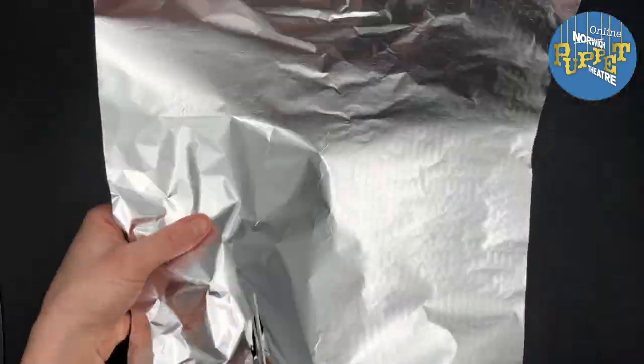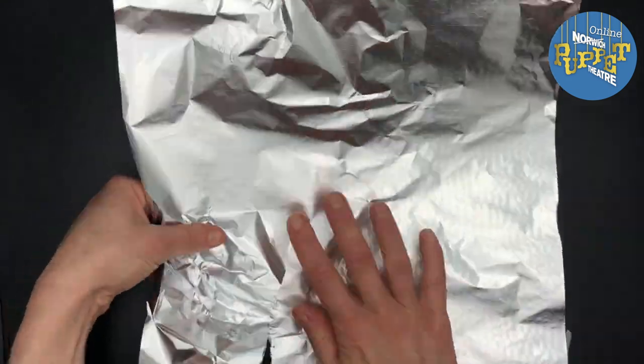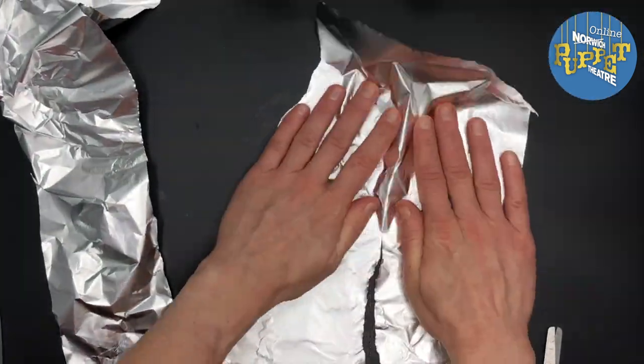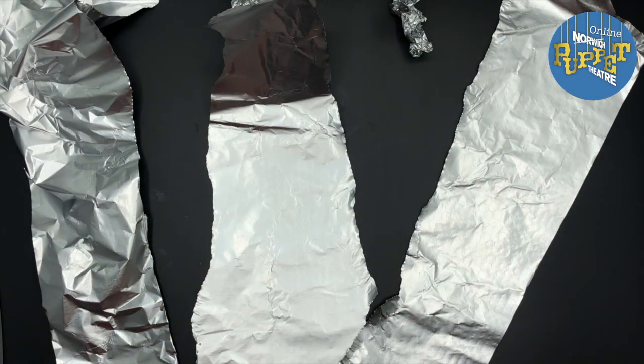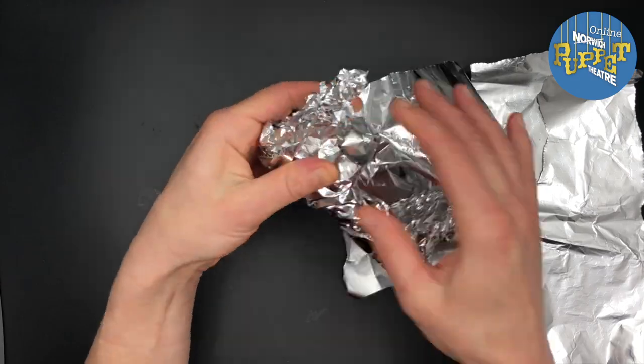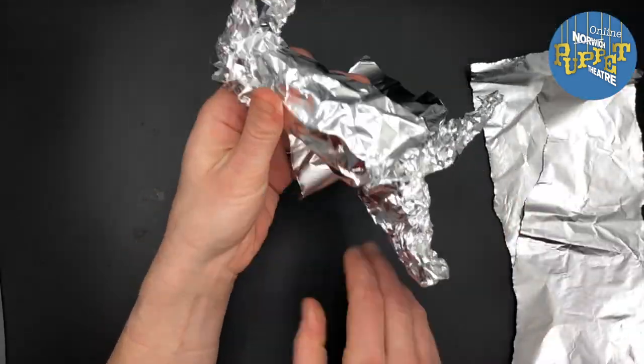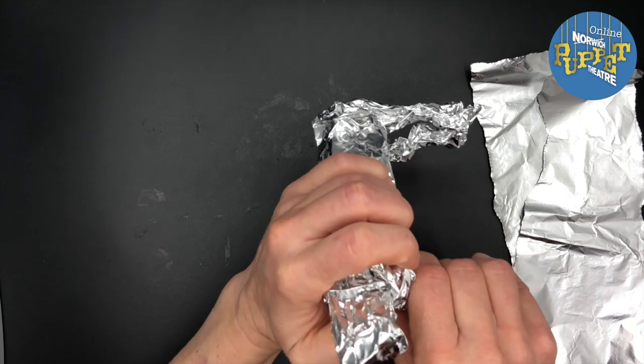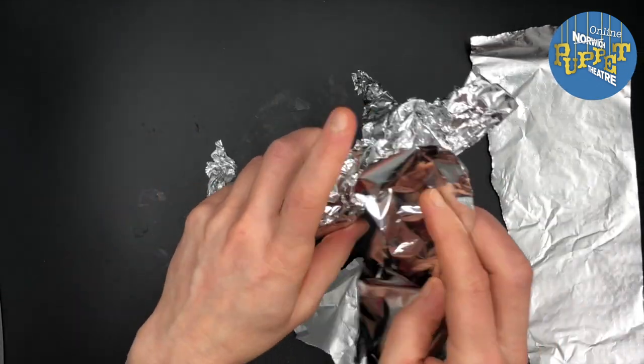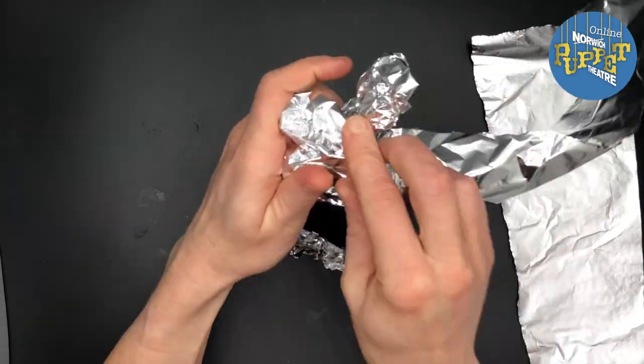Right, the next bit: get another piece of foil and tear or rip strips. You'll need a few of these. You can pop them to one side but taking the strips one by one, wrap them around your foil body. You can squish and scrunch and mold them until you get the shapes that you want.